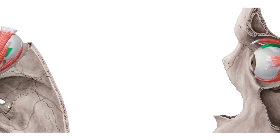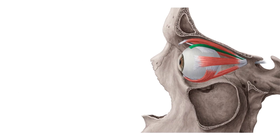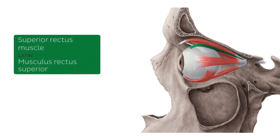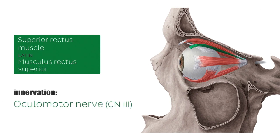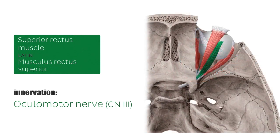The next muscle highlighted is known as the superior rectus muscle. The superior rectus muscle elevates and medially rotates the eye, and is innervated by the oculomotor nerve, or cranial nerve number three. It has its origin from the common tendinous ring and inserts on the sclera of the eye — origin point here, and the insertion point on the sclera.